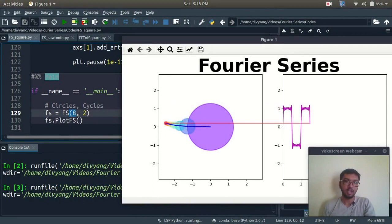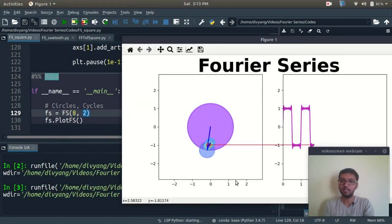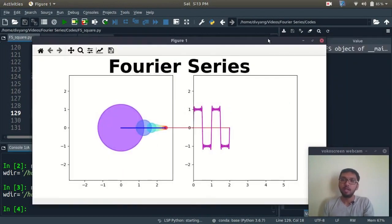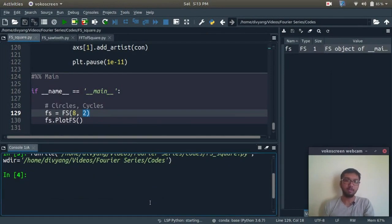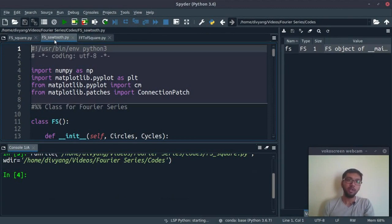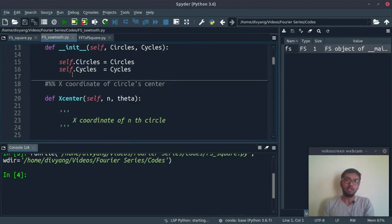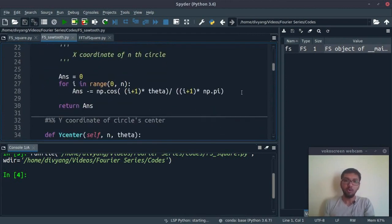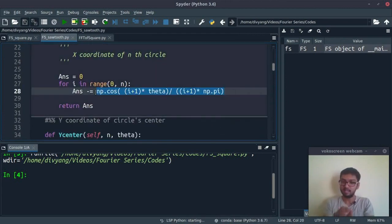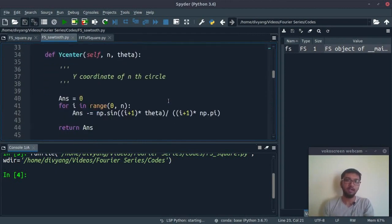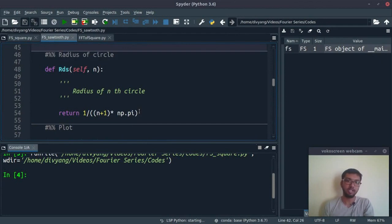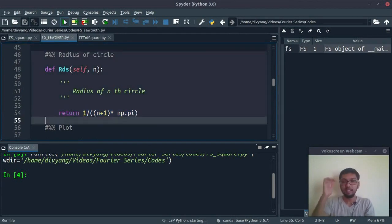Eight circles and two cycles means it will repeat the animation two times. Here is one more example for you: Fourier series for sawtooth wave. The entire code is the same. I have only changed these two lines - x_center and y_center - and obviously I have also changed this radius formula.